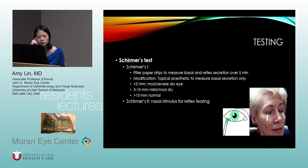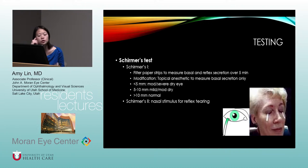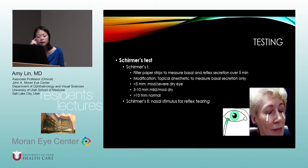Schirmer's testing uses filter paper strips to measure basal and sometimes reflex secretion over five minutes. A modification uses topical anesthetic to measure basal secretion only. Less than 5mm of wetting is moderate to severe dry eye; 5 to 10mm is mild to moderate; greater than 10mm is normal. There's also Schirmer's 2, where something is placed in the nose to induce reflex tearing, though I don't know anyone who does that.